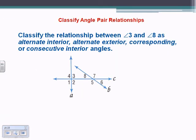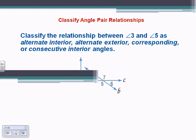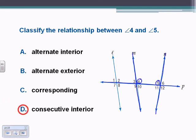Classify 3 and 8 — same side on the interior of the two lines being transversed, so therefore consecutive interior angles. Classify 3 and 5 — on the inside of the two lines being transversed and on alternate sides of the transversal, so therefore alternate interior angles. For 4 and 5 — on the interior of those two lines, so consecutive interior angles.